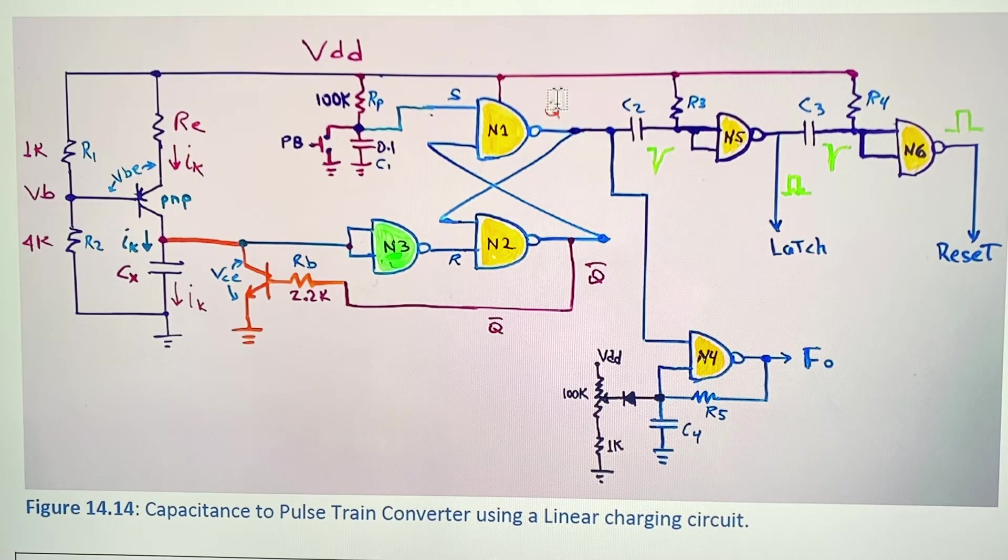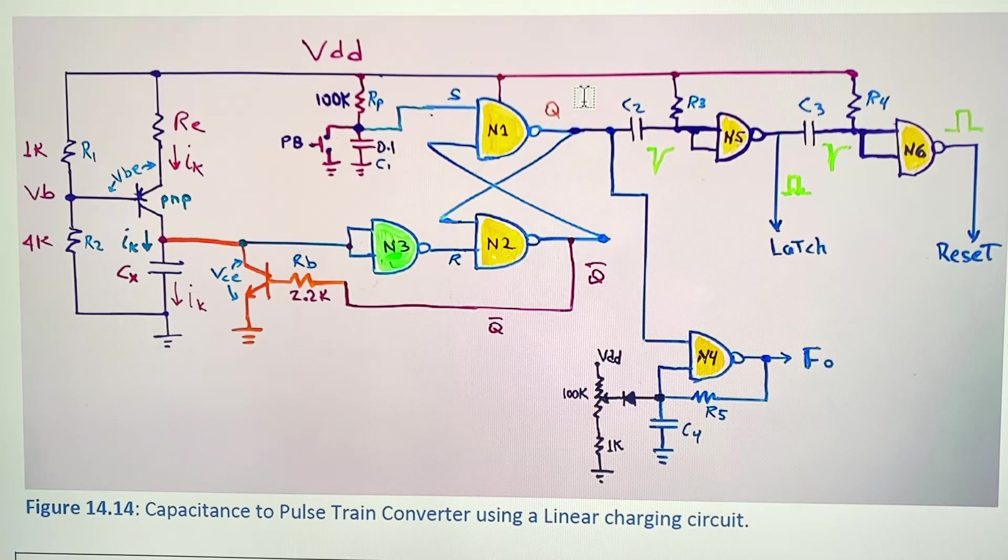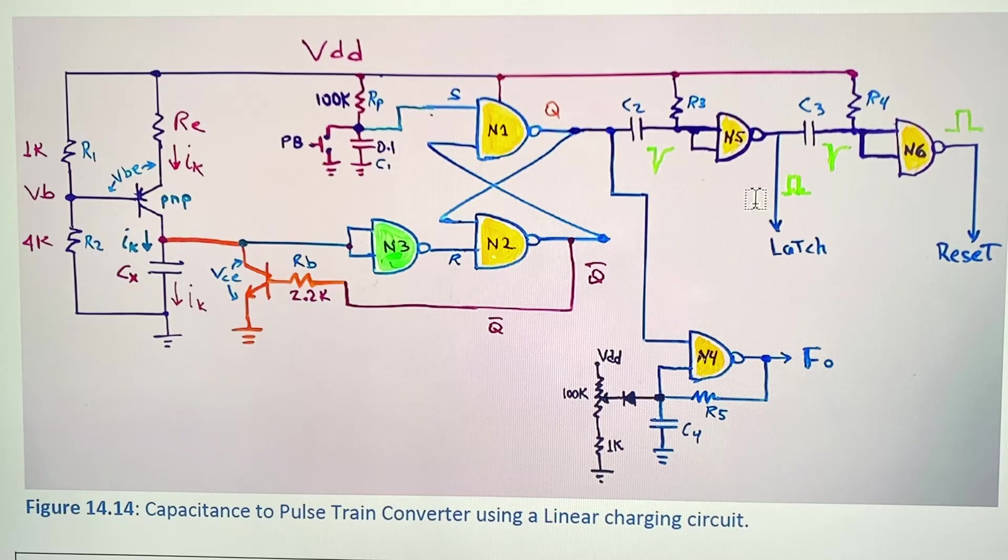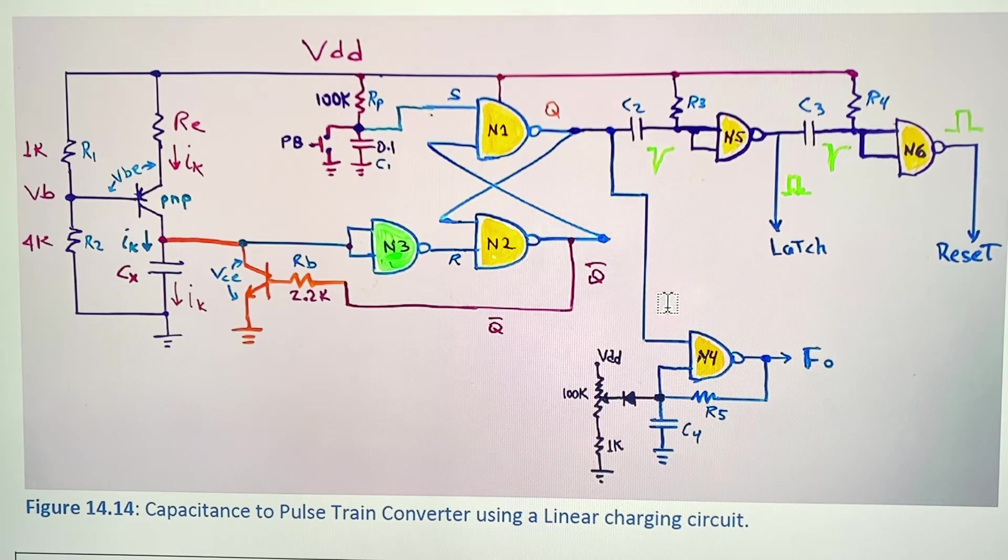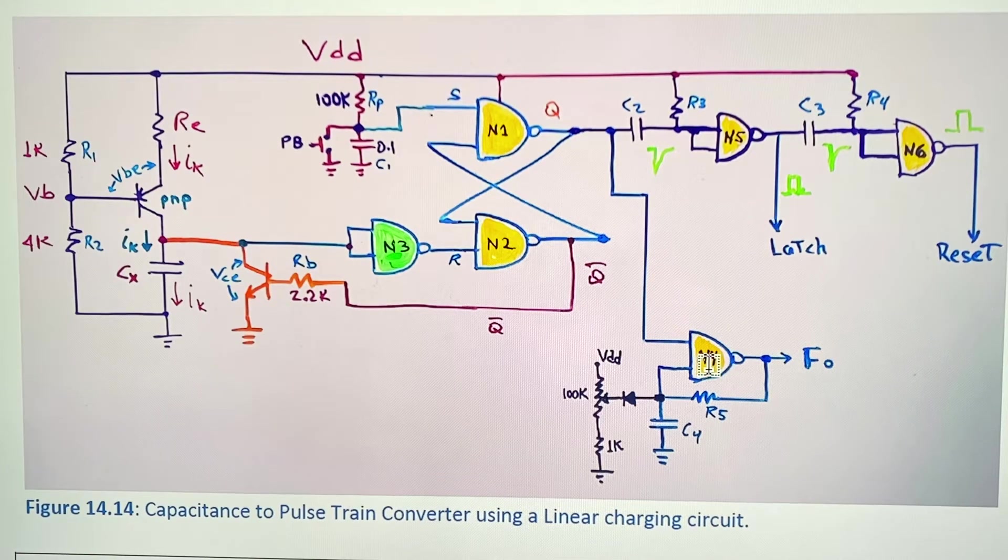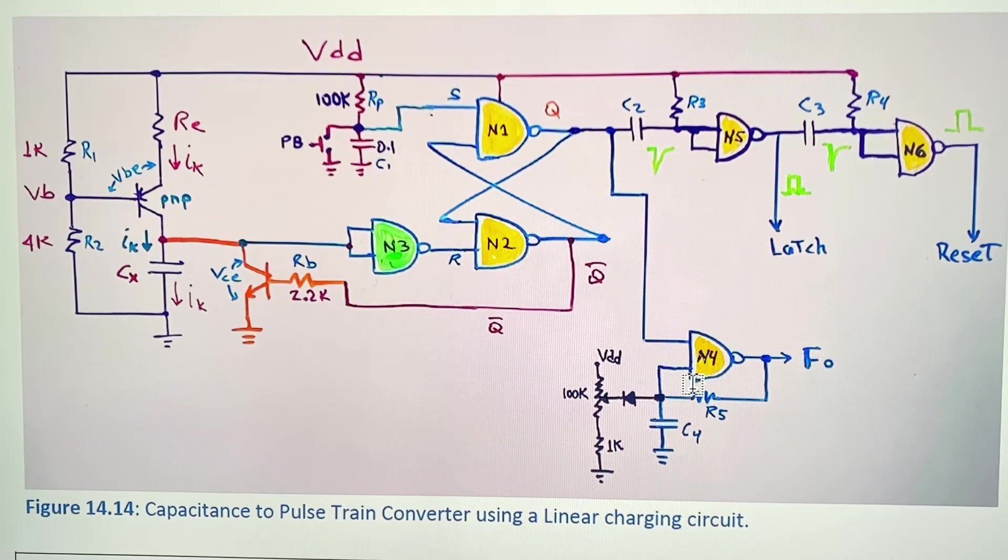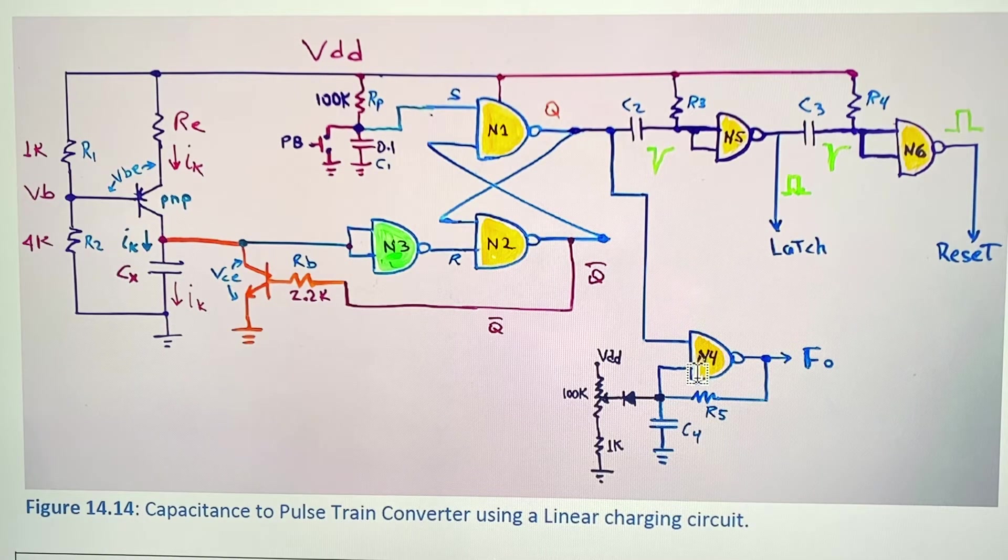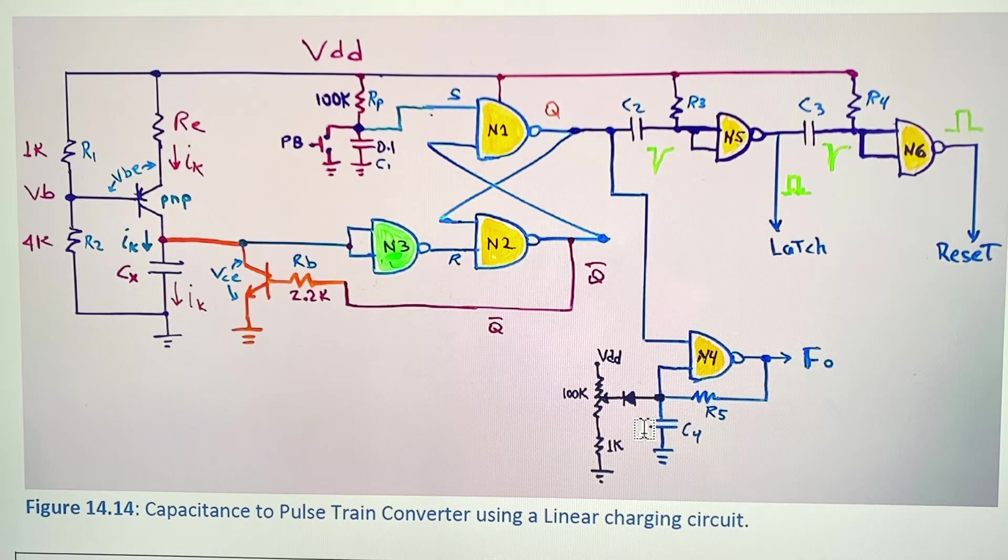When the signal ends the T period, this one sends a latch pulse. But first when Q goes to high, this Q output enables this oscillator made of N4.